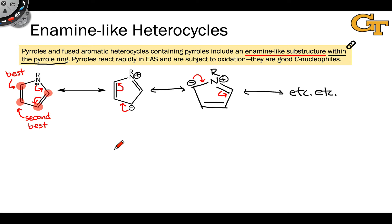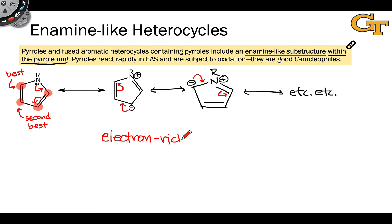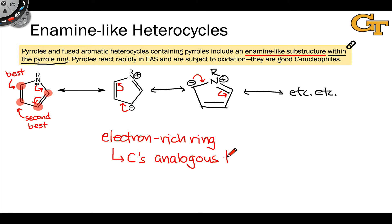We might call this carbon two, while carbon three — the carbon adjacent — is the second best. The other two carbons on the other side of the molecule are homotopic with respect to these first two. Here again, we see that pyrrole is an electron-rich ring, and the carbons within pyrrole are analogous to enamine alpha carbons and are nucleophilic as a result. So pyrrole reacts very rapidly with electrophiles, for example.